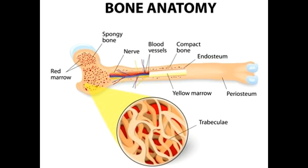Shape: A compact bone is cylindrical in shape and forms the outer smooth white portion of all bones. The shape of the spongy bone is very similar to that of a cuboid, and they are enclosed with a layer of compact bone.